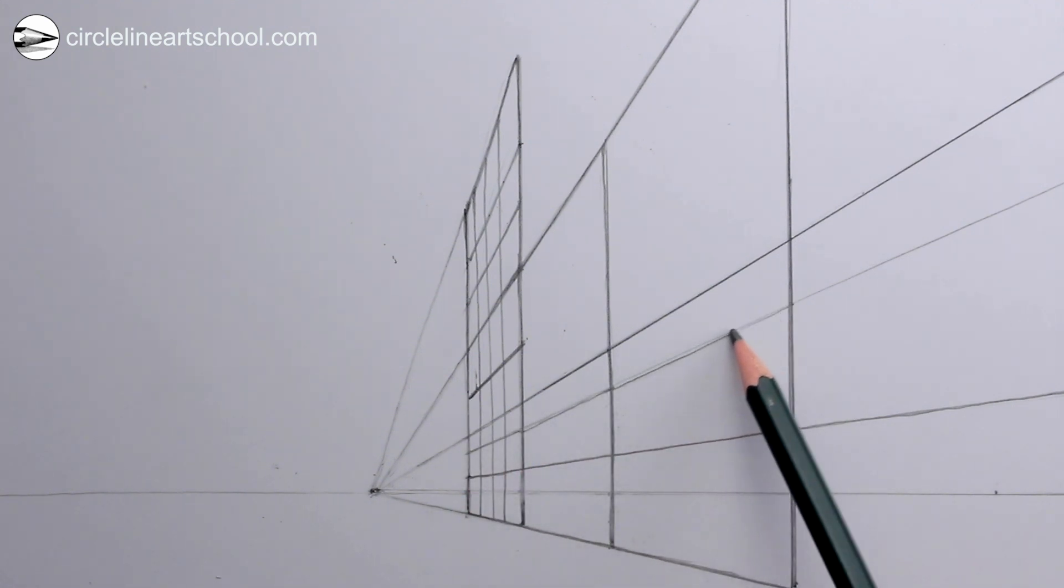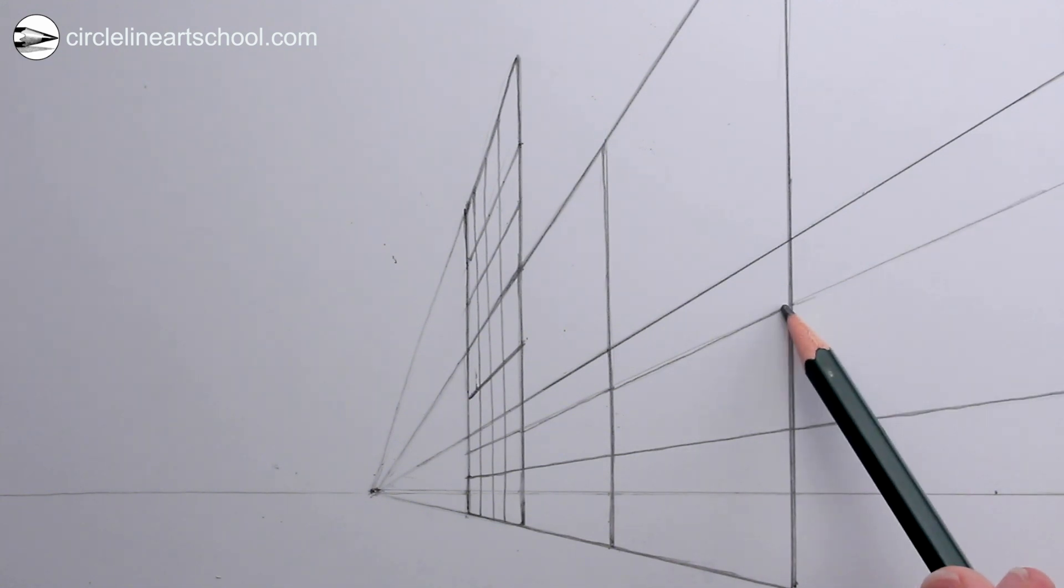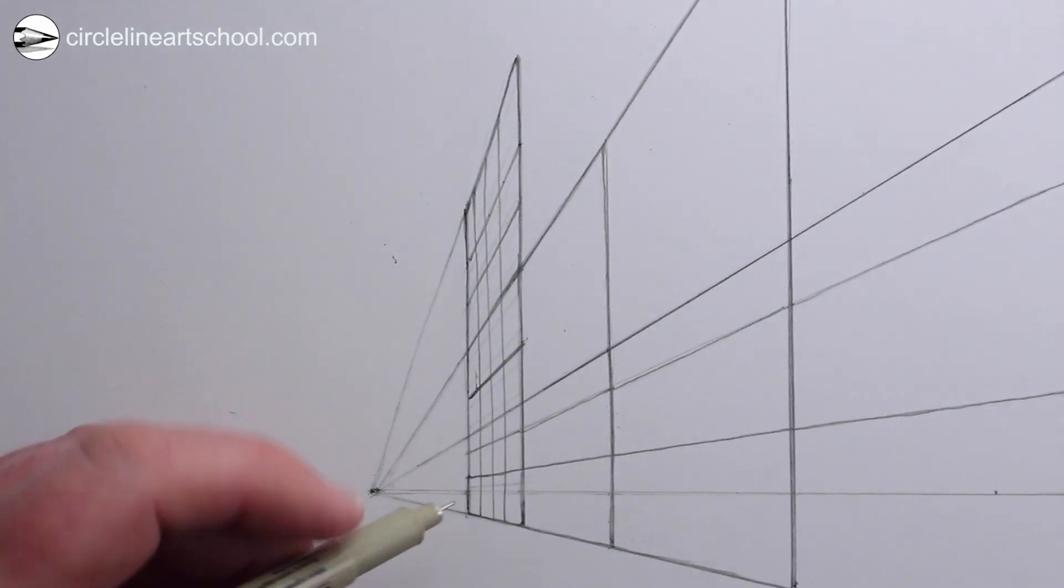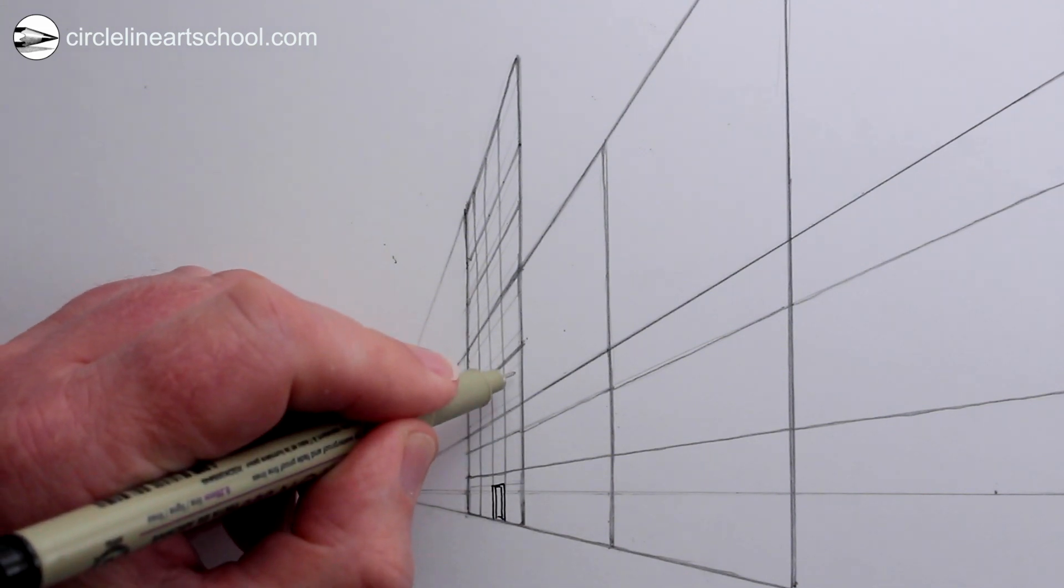But you might have noticed we've only used one vanishing point so far. Later on we'll use the second vanishing point on the right, it hasn't been forgotten. You might like to do some pen work on your drawing when you're ready. Draw the windows using the guidelines that we have already drawn.